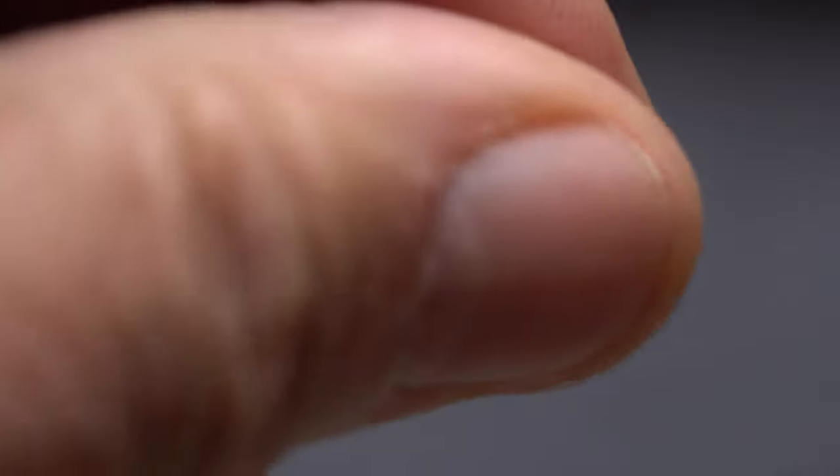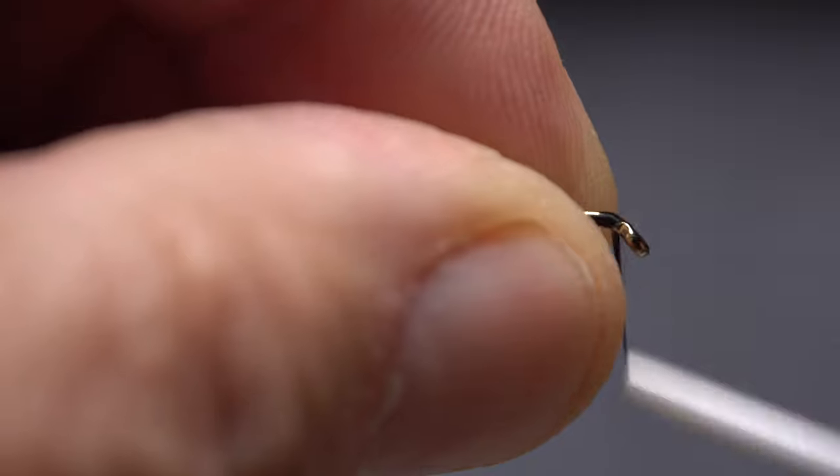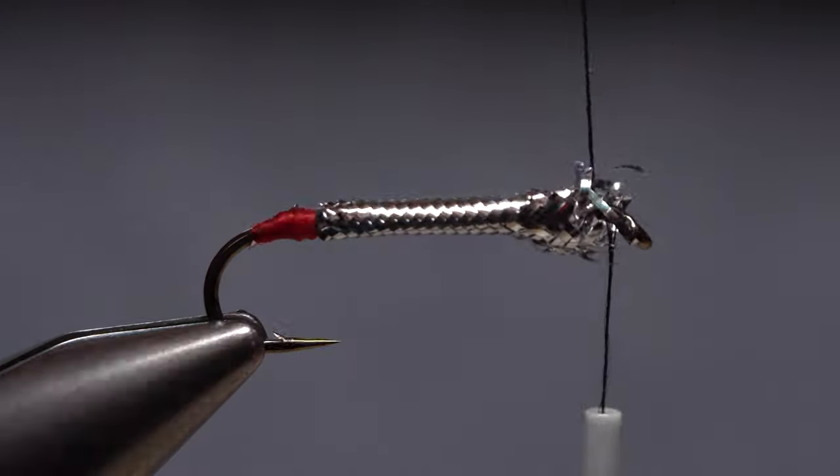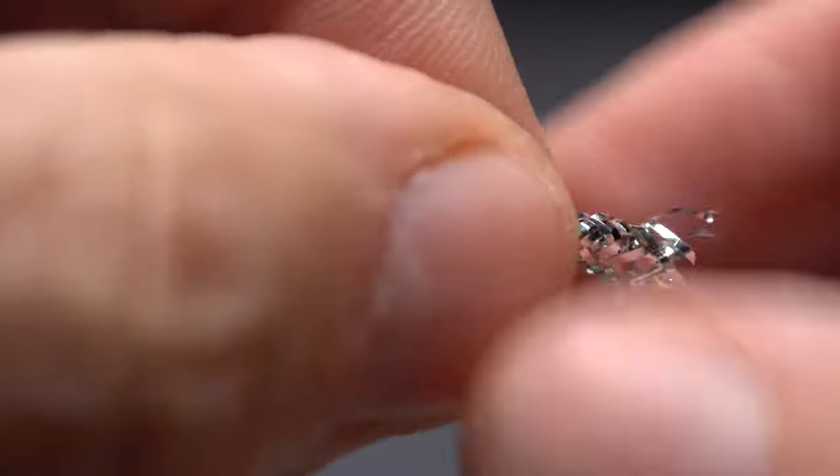If you want to switch thread colors, pull the tubing rearward and get the new color started on the hook shank behind the eye and snip off the tag.